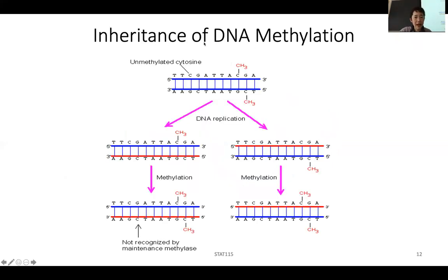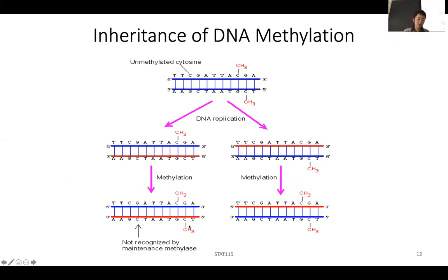This is the inheritance of DNA methylation. Methylation exists on one base, and also on the corresponding C on the other strand. As DNA replication happens, initially the new strand is not methylated. But the DNMT enzyme uses the parental strand as a template — seeing that one strand is methylated, it methylates the newly synthesized strand, so the new cell again has symmetric DNA methylation.